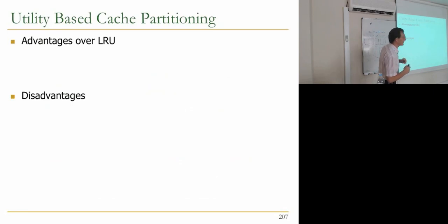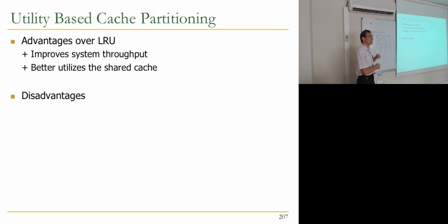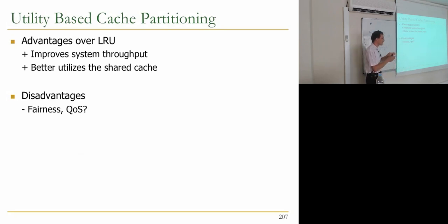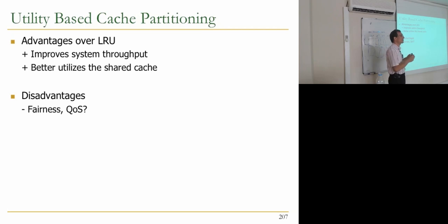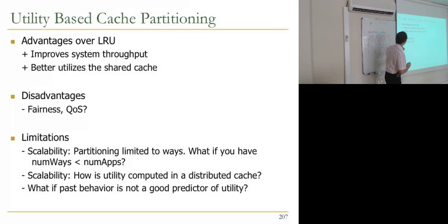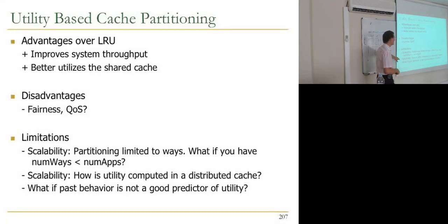The advantages over LRU: this improves system throughput and better utilizes the shared cache. The disadvantage is it doesn't account for fairness — three applications may benefit from the cache, but the algorithm allocates more to whichever application benefits just slightly more, starving others. There are also limitations: partitioning is limited to ways, there are scalability issues, and for distributed caches where L2 cache is spread across banks, computing utility requires communication across different cores where counters are at different places.